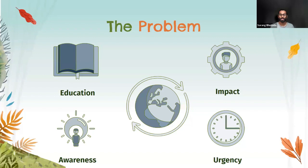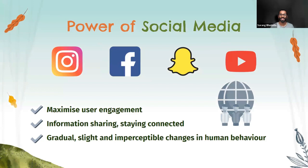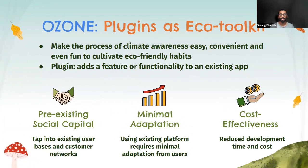To improve the health of our planet, contribution at an individual level is necessary. Social media can make this happen. They are powered by algorithms that are designed to maximize user engagement, resulting in billions of daily active users. We aim to channelize this power to cultivate eco-friendly habits.